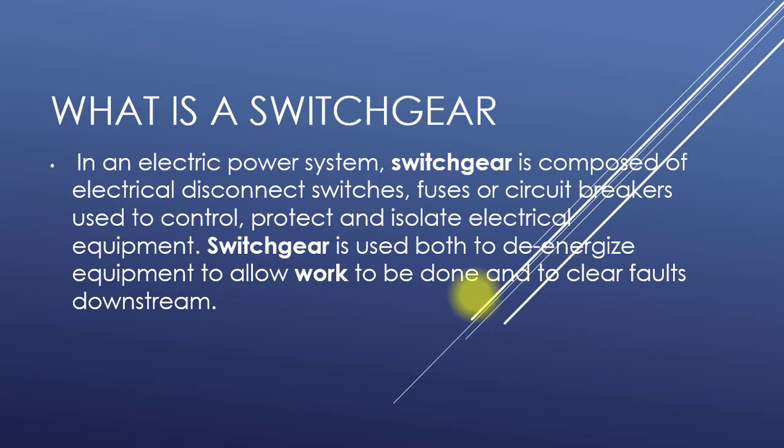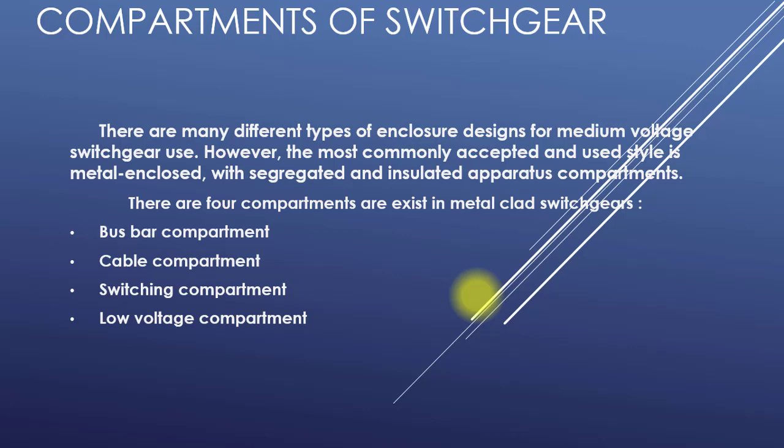There are many different types of enclosure designs for medium voltage switchgear. However, the most commonly accepted and used style is metal enclosed with segregated and insulated apparatus compartments. There are four compartments in metal-clad switchgears: bus bar compartment, cable compartment, switching compartment, and low voltage compartment.